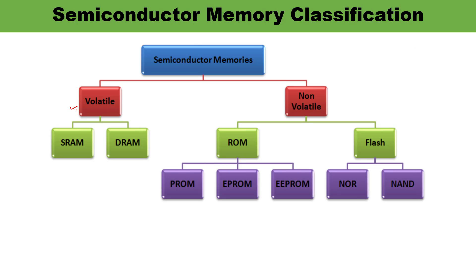Volatile memory, as the name suggests, stores data temporarily. Volatile data is stored only while the power is on — once the power goes off, whatever data is stored will be lost. In the case of non-volatile memory, data is retained permanently even if the power supply is off, which is why it is known as non-volatile memory.